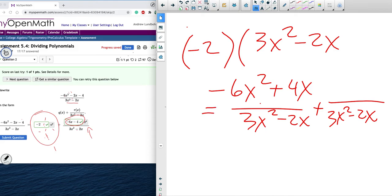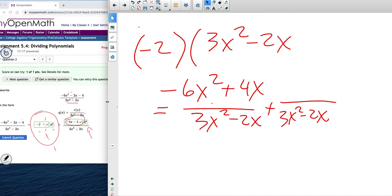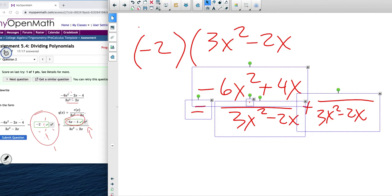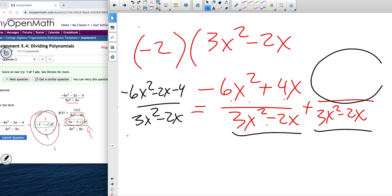To get the first part of, oops, I want to slide this all over. Negative 6x squared minus 2x minus 4, all over 3x squared minus 2x. All right. So, so far I have negative 6x squared plus 4x over this, which reduces to negative 2. I got to figure out what goes here so that if I add these two fractions together, I get this.